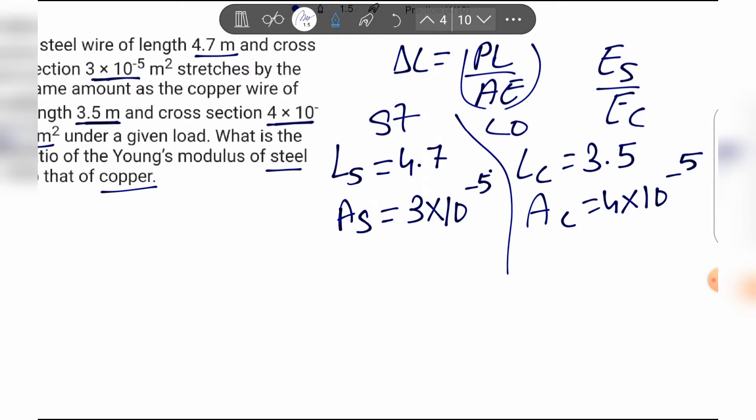The load on the steel wire equals the load on the copper wire, which is P. Since both wires stretch by the same amount under the given load, we can equate their elongations.